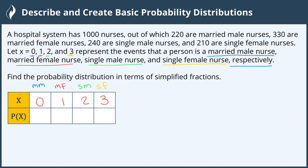Let's find the probability of each. The total number of nurses is 1,000. There are 220 married male nurses, so P(x=0) = 220/1000. The married female nurses are 330, so P(x=1) = 330/1000. Single male nurses are 240, so P(x=2) = 240/1000. Single female nurses are 210, so P(x=3) = 210/1000.